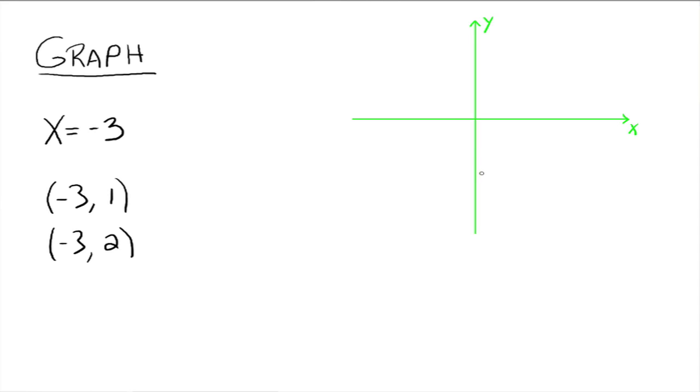So when we go over here to plot these ordered pairs, we have negative 1, negative 2, negative 3, and negative 3, 1, which would be right there.